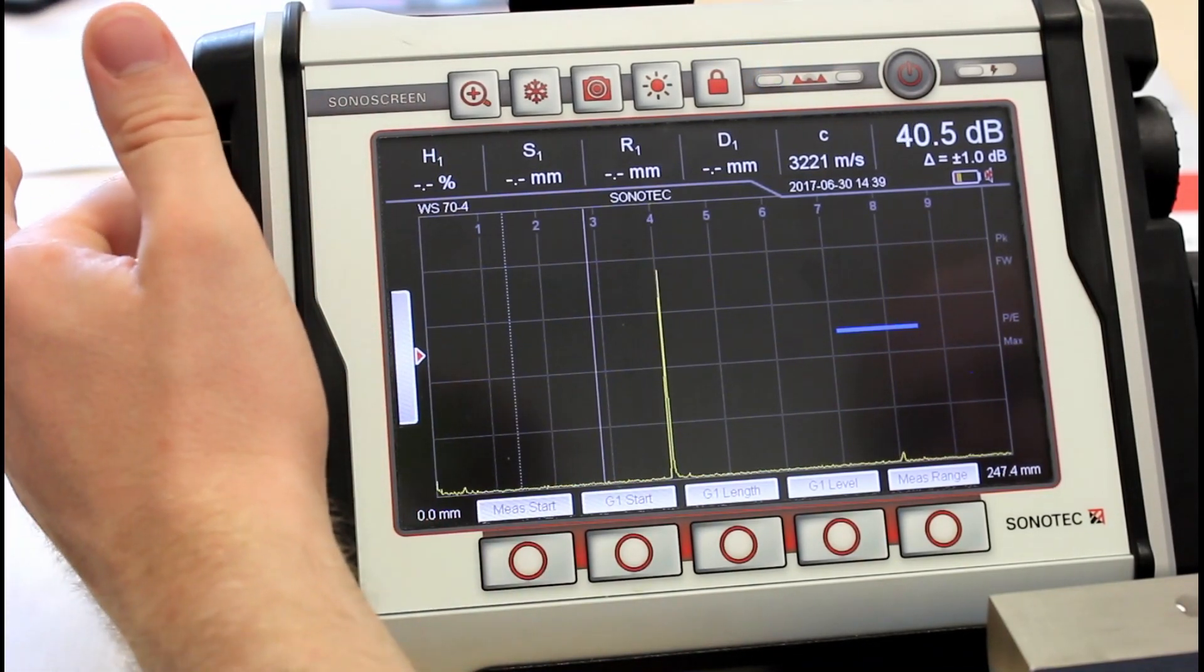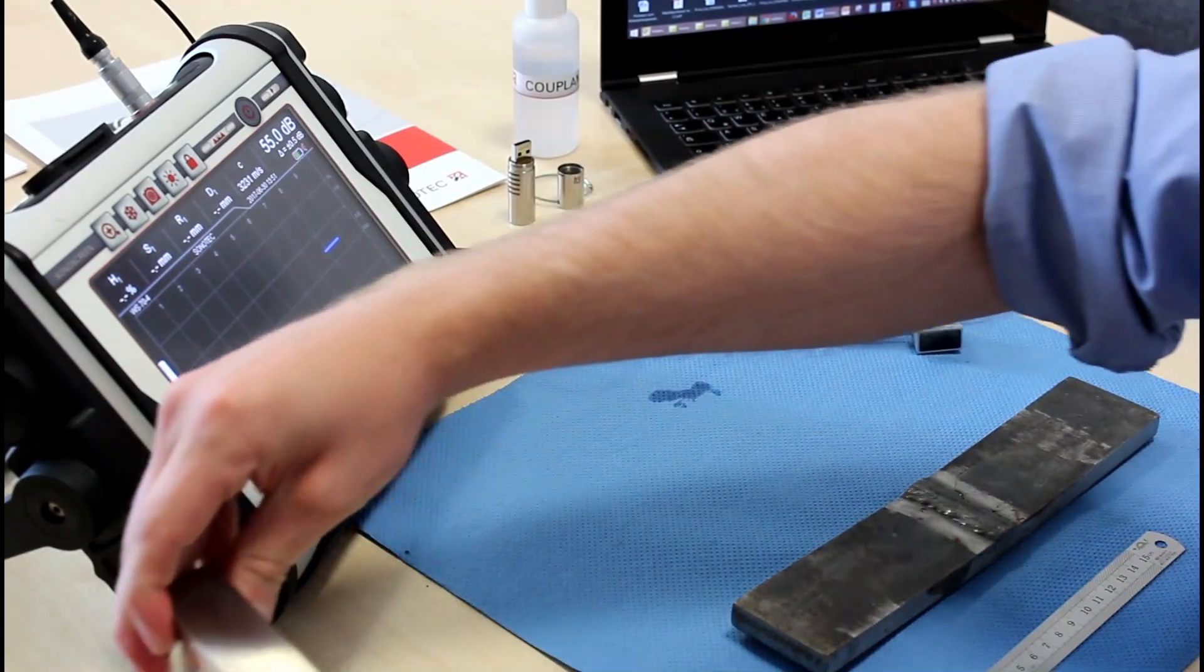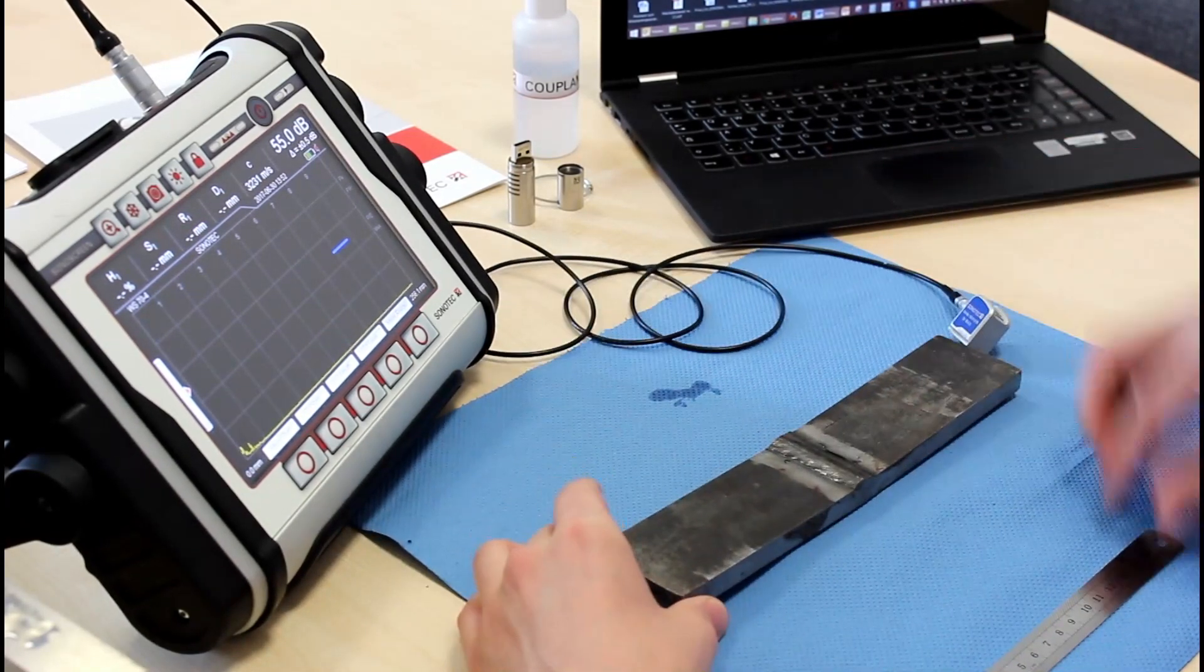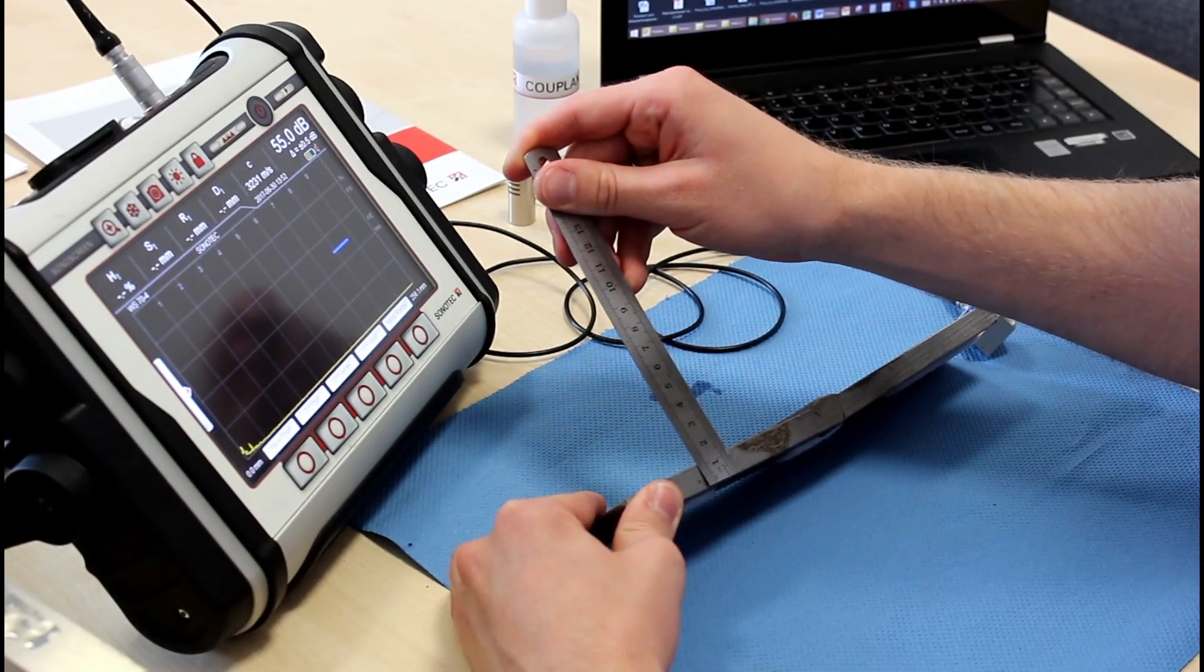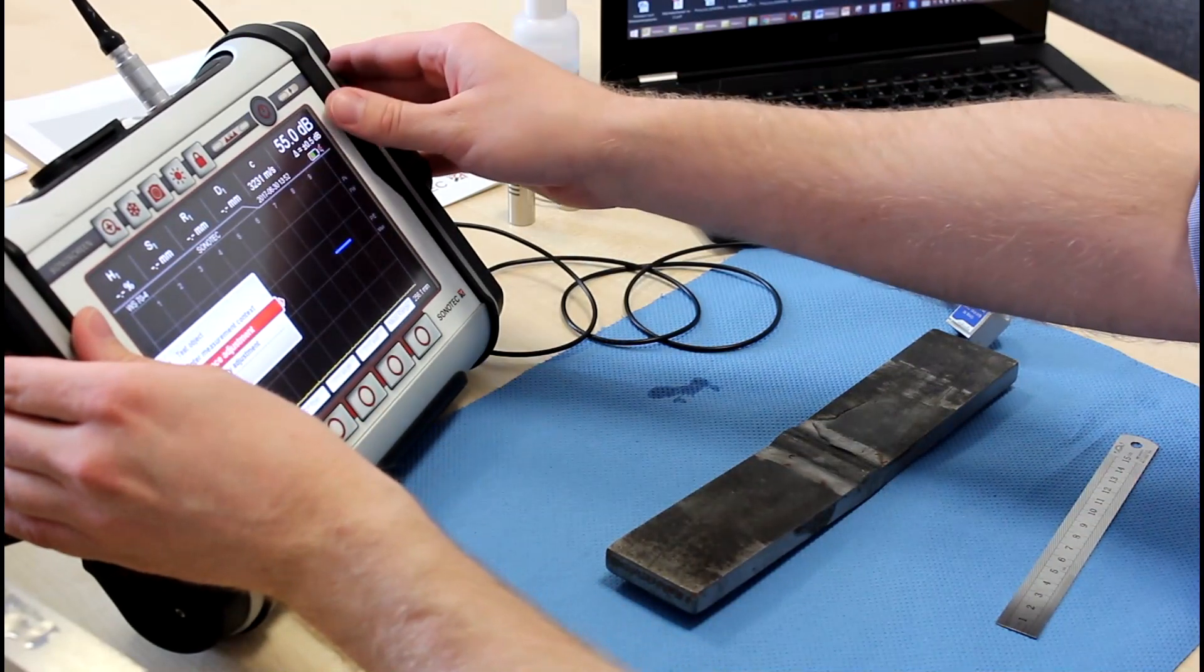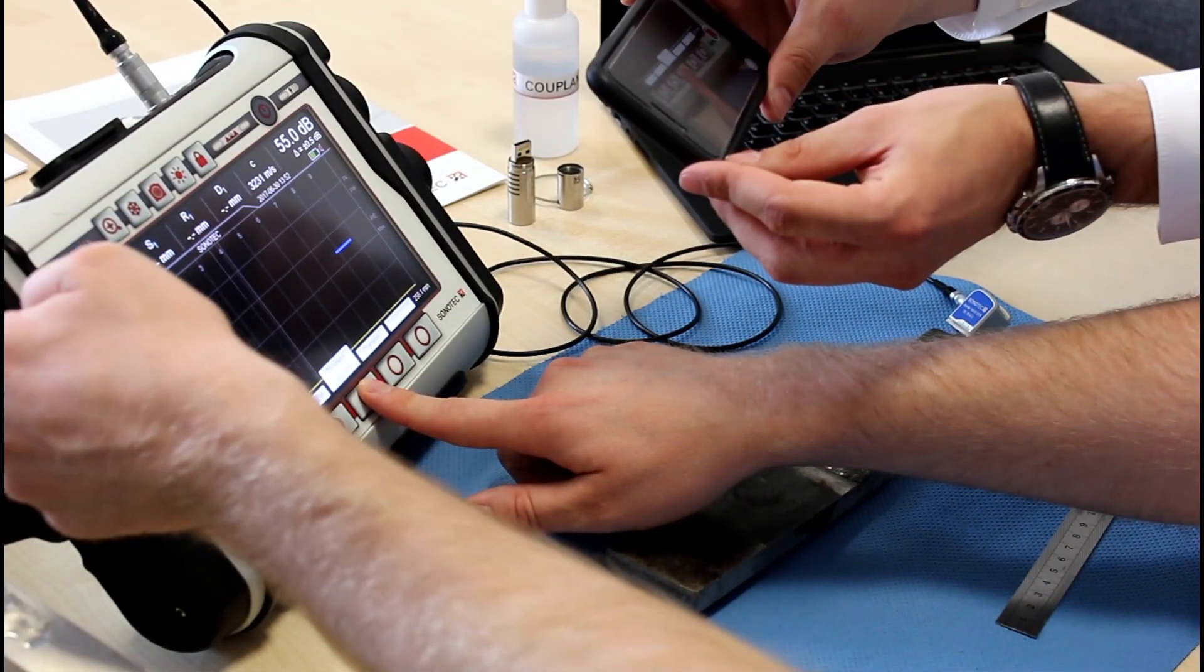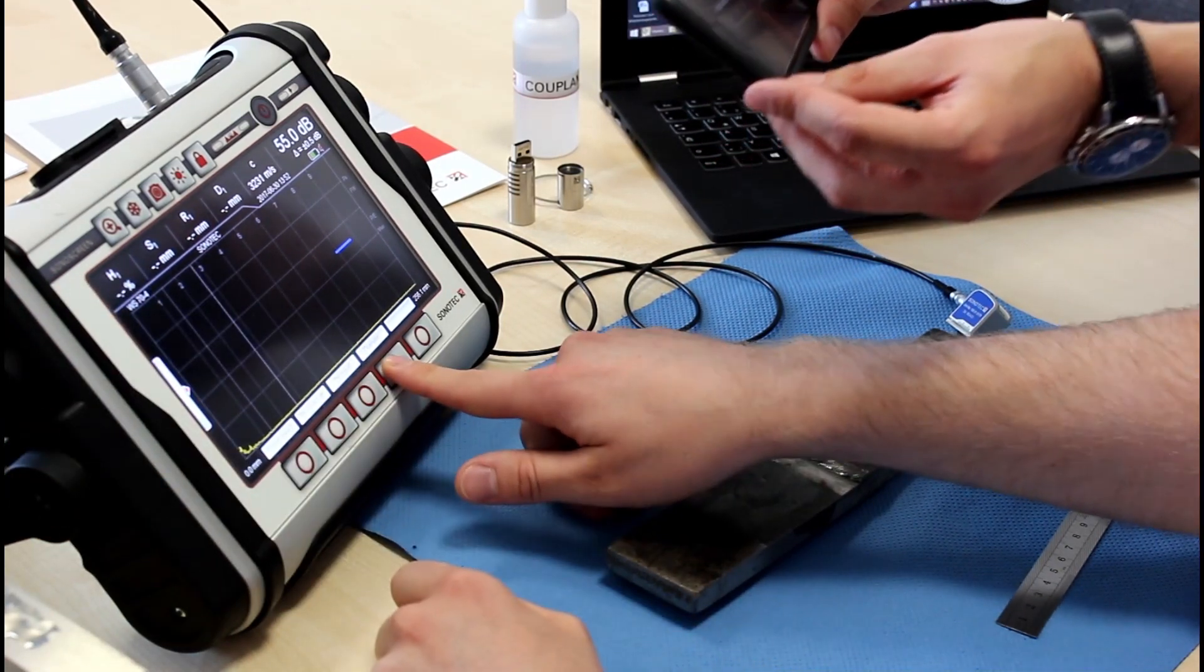So calibration was performed correctly. Now we can move to actually measuring our weld or whatsoever. We have a sample weld right here. Thickness is approximately twelve millimeters. So we are going to change that. So test object. Test object thickness twelve millimeters. It is a flat object, but you can also test convex or concave surfaces and put in a diameter.